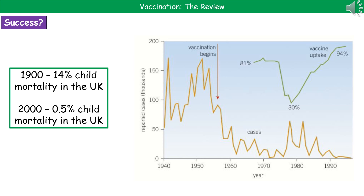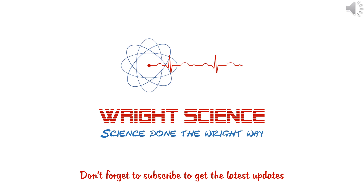We then see the vaccine uptake increasing again and the number of cases dropping right off. If they give you a graph to discuss, make sure you include things like the years, use numbers where you can from the graph, and read it carefully. Make sure you are using proper comparisons and link increases in one measure with decreases in the other, with years and numbers where possible. Hopefully, at the end of this video you can now state what a vaccine is, explain how they provide immunity to a disease, and evaluate data on a vaccination program given in the form of a graph or a table.